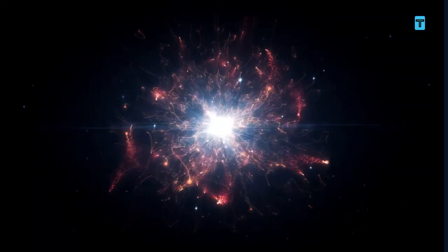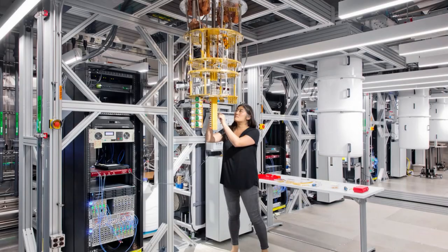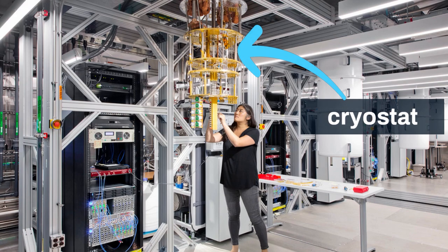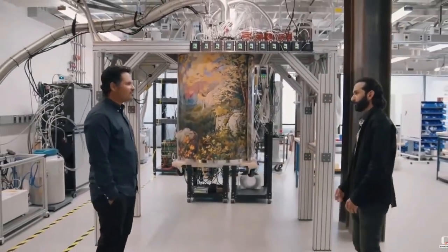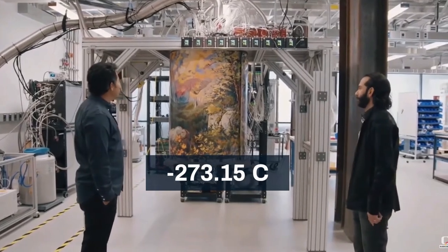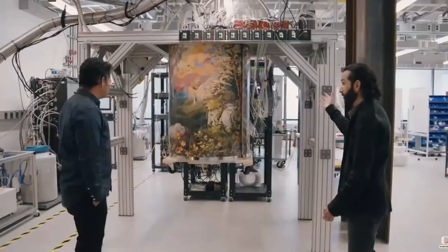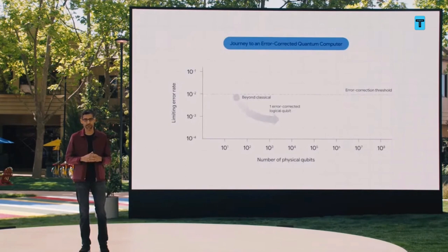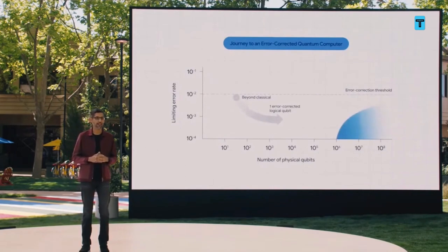As the developers say, qubits are very fragile — even cosmic rays hurt them. That is why the quantum chip is kept in a cryostat, basically a large freezer, which cools the chip to almost absolute zero: minus 273.15 degrees Celsius. At this temperature, calculations are less likely to be thrown off course. Google says its next milestone is an error-corrected logical qubit, which can reduce the effects of noise on stored quantum information.